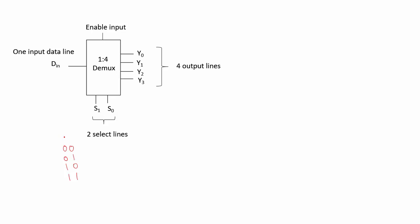When the select combination S1 S0 is 00, the DIN line gets connected to Y0. When S1 S0 is 01, DIN gets connected to Y1. When S1 S0 is 10, DIN gets connected to Y2, and when S1 S0 is 11, DIN gets connected to Y3. All of this is true only if the enable signal is 1. If it is 0, then irrespective of the combination of S1 S0, all 4 outputs will be 0 because the demultiplexer is disabled.